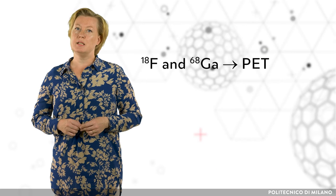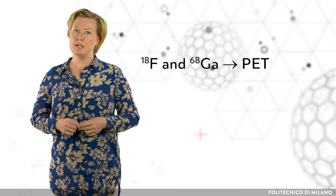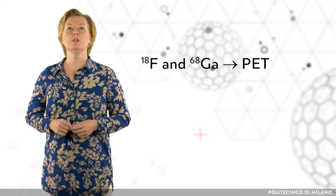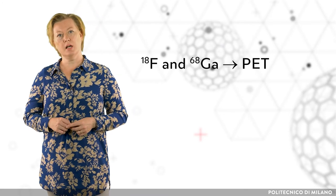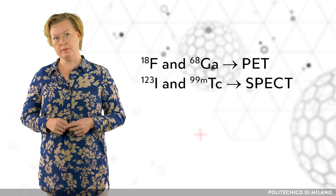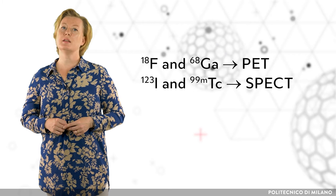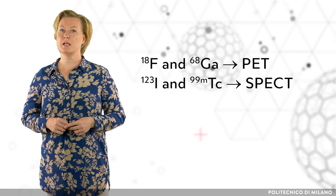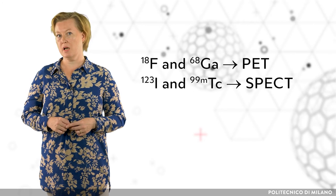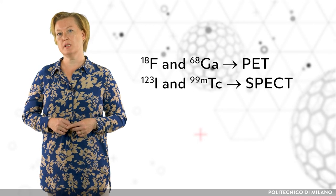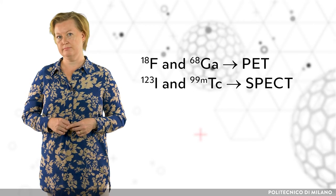Fluorine-18 and gallium-68 are commonly used PET isotopes, whereas iodine-123 and technetium-99m are used in SPECT imaging.